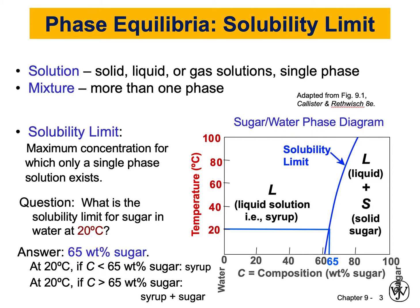Before we start with the solubility limit, we need to identify and define a couple of things. When we say a solution in materials, it's a liquid, solid, or gas solution that has a single phase. What we mean by a single phase is that we have the same distribution and concentration of elements in that solution everywhere — there is no change from one location to another of that solid, liquid, or gas. All the elements are equally distributed in the same way everywhere in that solution.